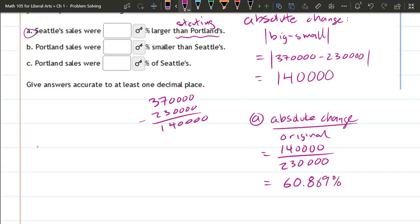Now, there may be some rounding involved. Accurate to at least one decimal place, that's fine. You can use more decimal places, and three decimal places is at least one. So we're fine there. All right, that's part A.